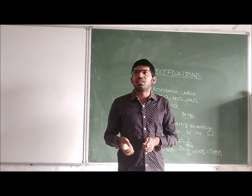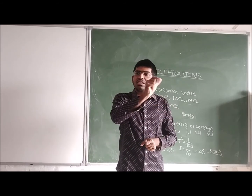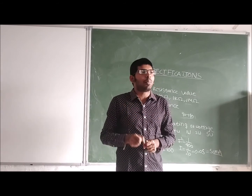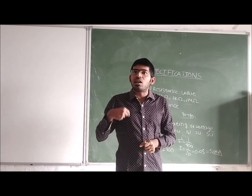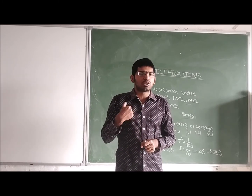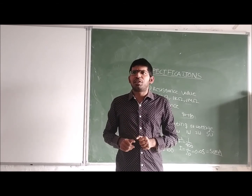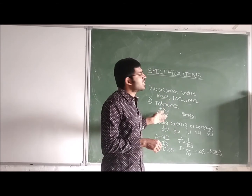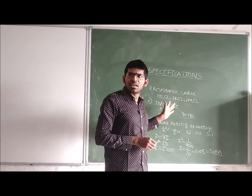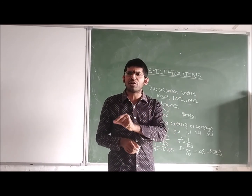Some other specifications also exist, like temperature range — at what temperature range the resistor can operate; operating frequency — at what frequency it can operate; electrical noise — up to which level it can withstand; and voltage coefficient. These are all minor specifications. The three major specifications — resistance value, tolerance, and power rating — are required to select a proper resistor for your circuit.